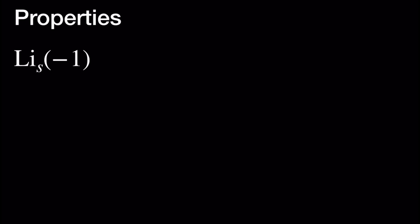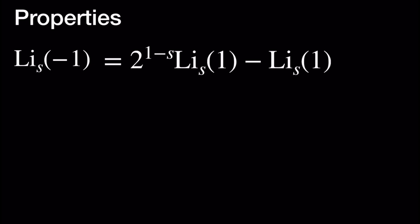Next, we want to look at Li sub S at negative 1. Using the previous relationship, this is equal to 2 to the 1 minus S times Li sub S at 1 minus Li sub S at 1. After factoring and replacing Li sub S at 1 by zeta at S, we get 2 to the 1 minus S minus 1 times zeta at S. And this is a good place to stop. Thank you for watching and see you next time.